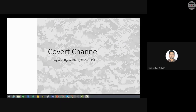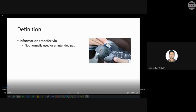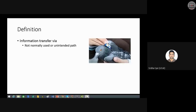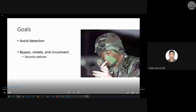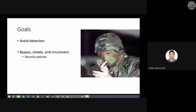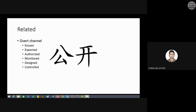A covert channel refers to a communication mechanism used to transfer information through a not-normally-used or unintended means. The immediate goal is to avoid detection when a malicious party is trying to transfer information, and the ultimate goal is to bypass and circumvent any sort of security policies.